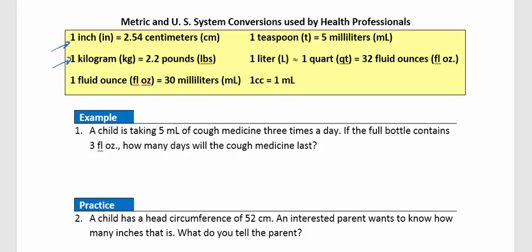One kilogram is 2.2 pounds. One fluid ounce is 30 milliliters. One teaspoon is 5 milliliters. One liter is approximately one quart — this is not exact but is commonly used in health professions. One quart is 32 fluid ounces, and one cc is the same as one milliliter.